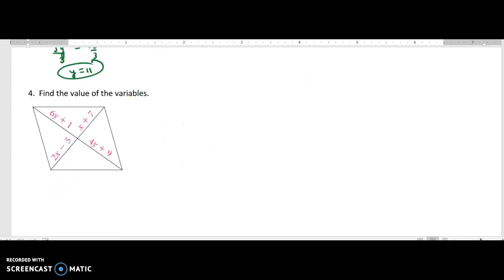Now here, find the value of the variables. When I look at Y, the Y expressions basically give me these pieces of the diagonals. The X expressions give me these pieces of the diagonal. Well, what property do we know about the diagonals of a parallelogram? That they bisect each other. So these blue segments are congruent, and then these green segments are congruent. So to find Y, I'm just going to set those blue segments congruent to each other or equal to each other.